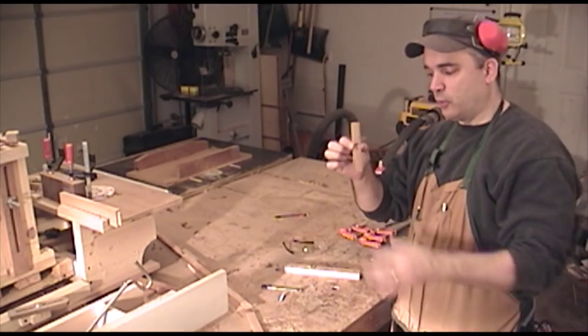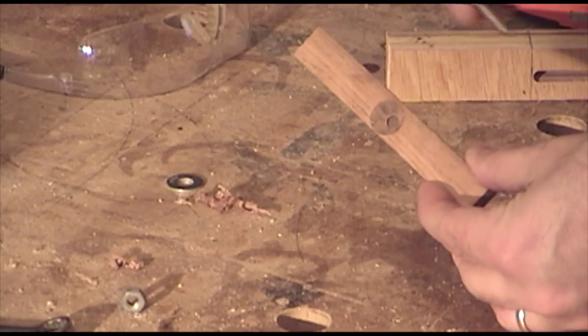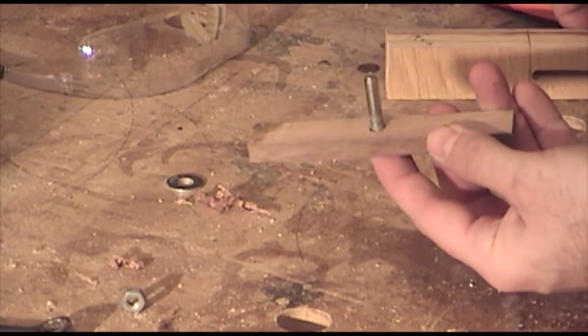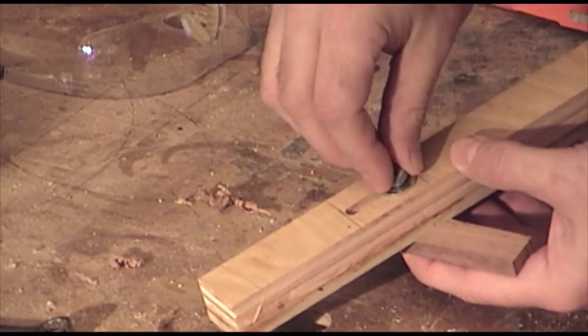I took a small piece of wood, which is the width of my miter track on my bandsaw, and I drilled a hole in it and countersunk. Now we can attach this to the main jig body.